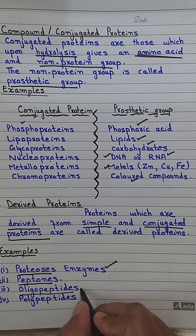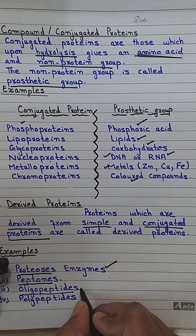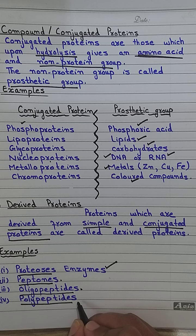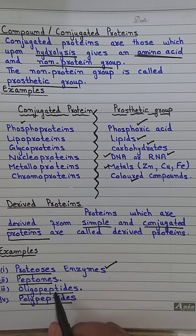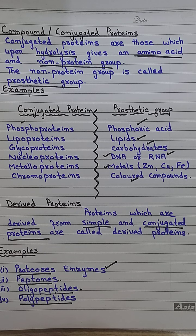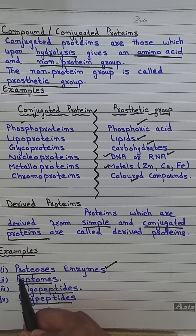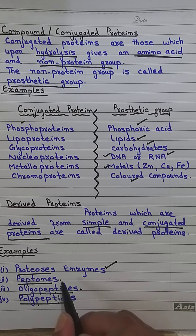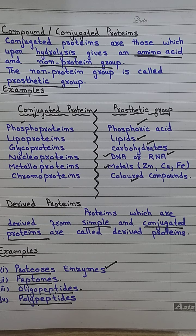In derived proteins, oligopeptides have amino acid numbers from 2 to 10 — for example, tripeptide, tetrapeptide, pentapeptide. Polypeptides are formed when many amino acids combine into a polypeptide chain. So peptones, oligopeptides, and polypeptides together make up the derived proteins, with amino acid numbers ranging from 2 to 10 for oligopeptides.